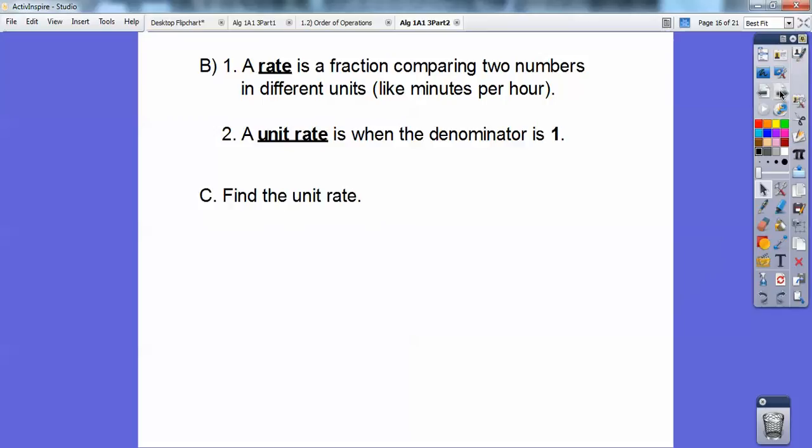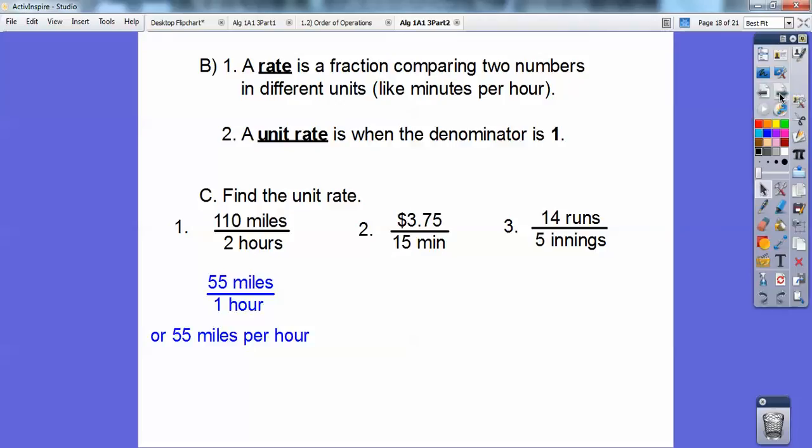So this book likes you to find the unit rate. Here's an example, 110 miles per two hours. So the unit rate is when I want the denominator to be one. So I'm going to divide this by two and divide this by two. Here I'm going to divide this by 15 and divide this by 15. Here I'm going to divide this by five and divide this by five. And you can divide by five, you guys. It doesn't go in nice and evenly, but you can get a decimal. Five goes into 14 twice with four left over. So five goes into 40 eight times. So it's going to be 2.8 on that one.